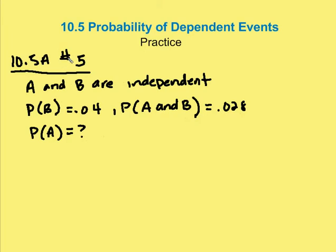Next problem is 10.5A, number 5. And we're trying to find out what the probability of A is.